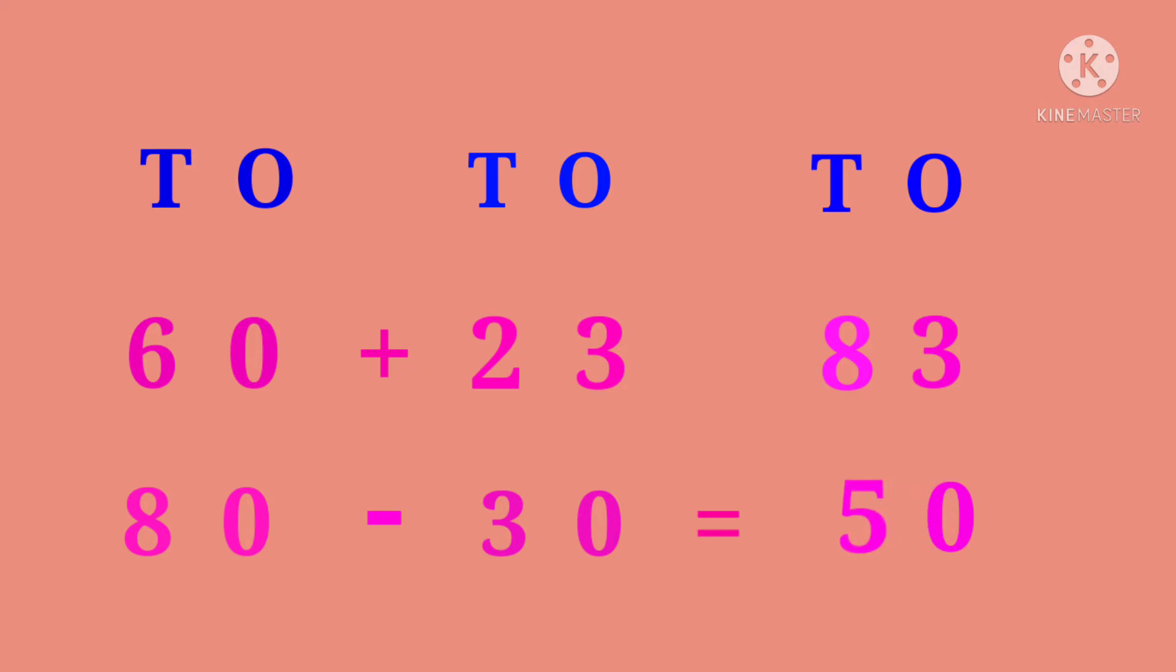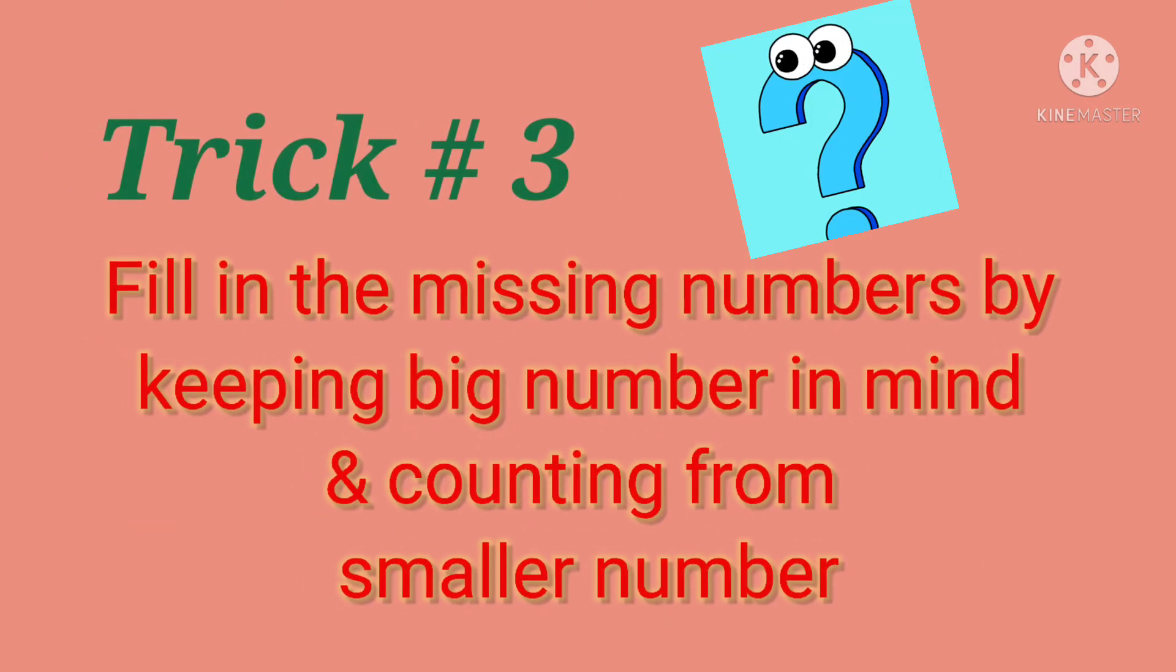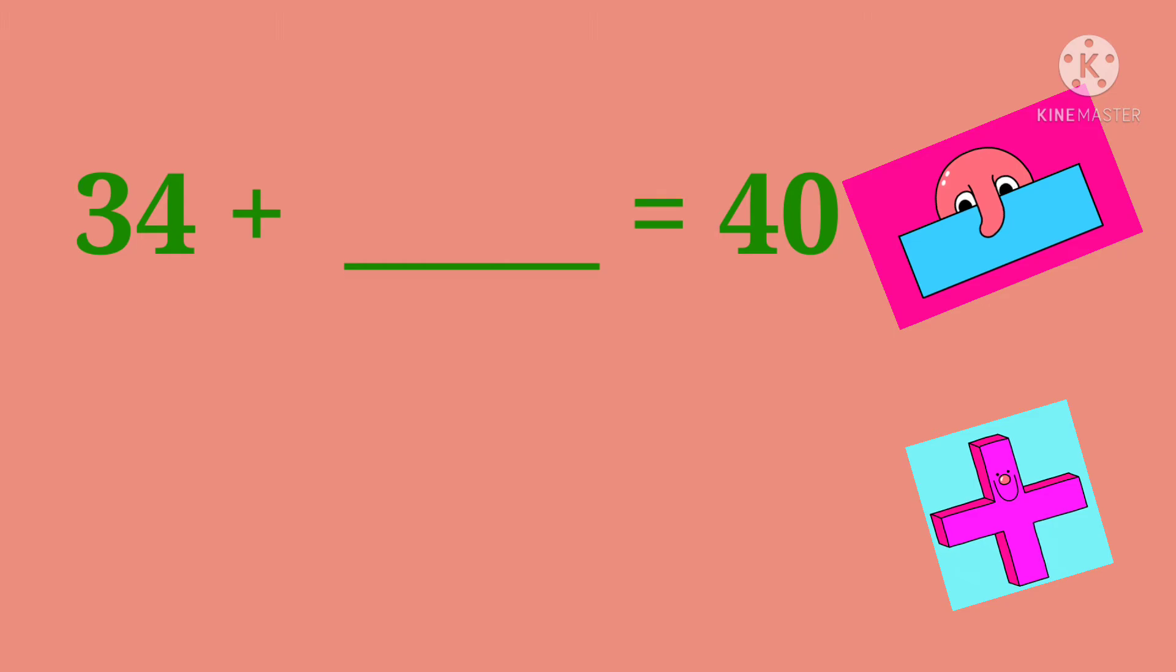Moving on further to the third trick, fill in the missing numbers by keeping the big number in mind and counting from the smaller number. Generally, this type of exercise is very confusing for the kids, so let's start practicing these and let us give them a small trick, a small hint so that they can do these exercises very easily. Now here, whether it is addition or subtraction, they have to start counting from the smaller number and stop on the bigger number. That is it.